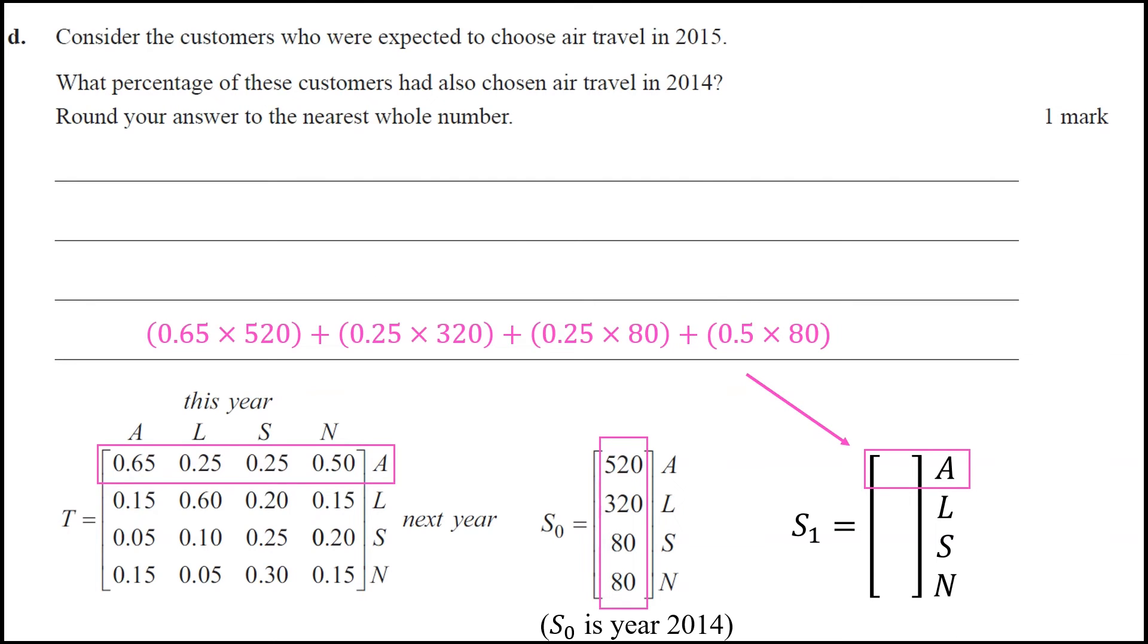Okay, so let's set up our matrix equation again. And now what we care about is the air travelers in 2015. So where would they come from? Again, from our transition matrix and our state matrix. And we want to know what percentage of them would have chosen air travel in 2014. Because we're wanting a percentage of these customers, we're going to actually need to work out that value so that we can work out the percentage.